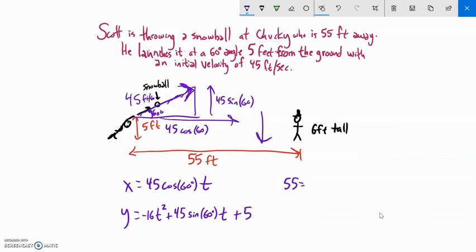55 equals 45 cosine 60 times t. That's just a number multiplied by t. If I solve for t, I divide both sides by 45 cosine 60. So 55 divided by 45 cosine 60 degrees equals t.